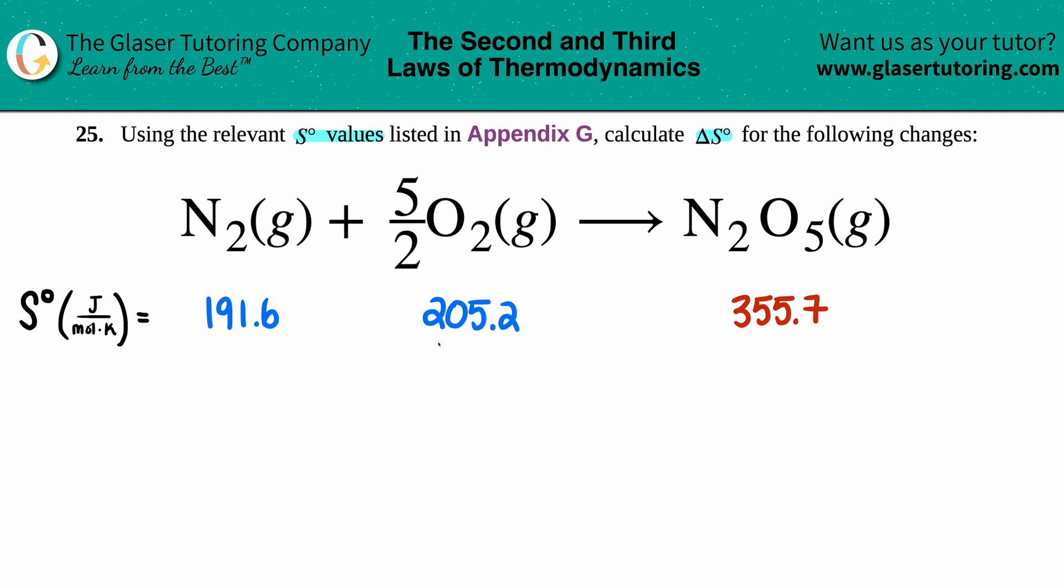We want to find delta S. Remember, that delta triangle means change, and S means entropy. So we're looking for a change in the randomness, disorder, or chaos of the system. Are we going to more randomness or less randomness?